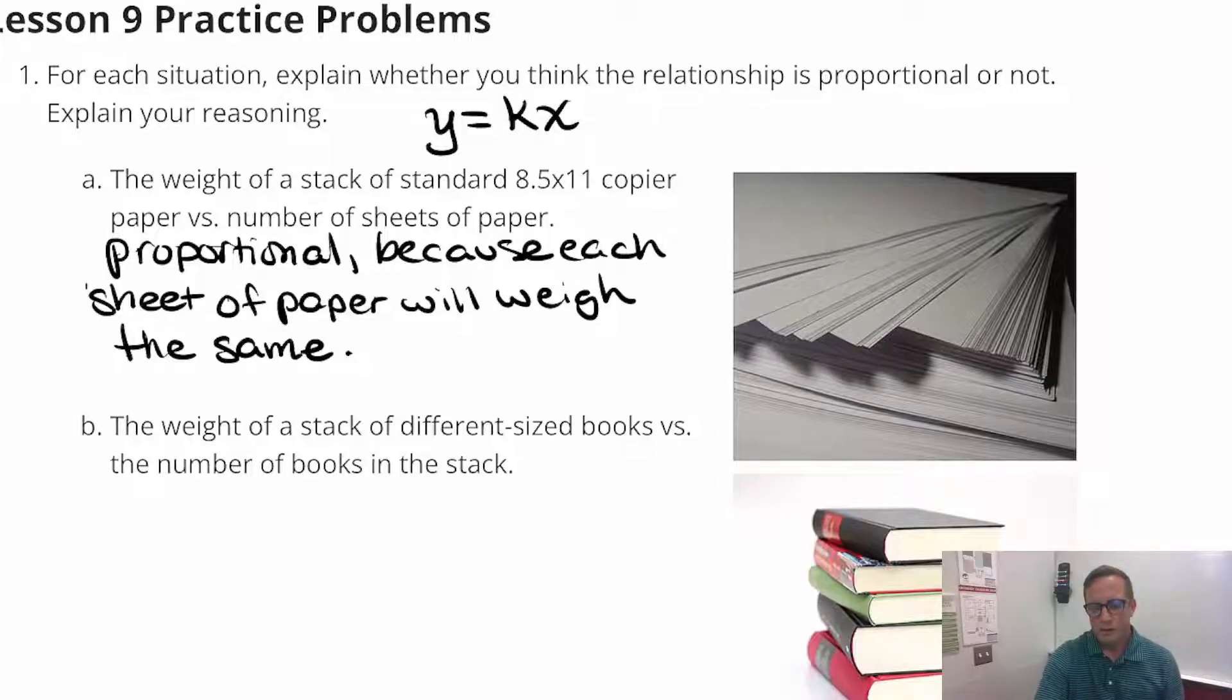This would be proportional. It's proportional because each sheet of paper will weigh the same. Nothing is exactly perfect, but I would expect that each piece of paper is going to be right around the same weight. There could be small discrepancies, especially if you're looking at hundreds of an ounce or something like that. But it's proportional for sure.